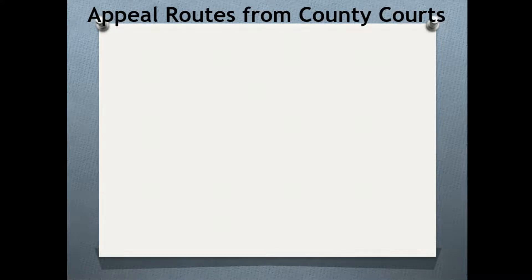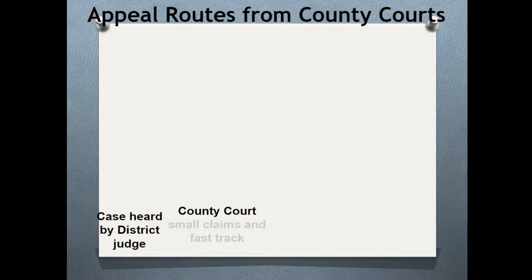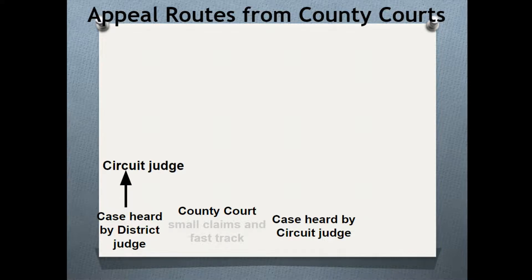If you've had your case heard and you're not happy with the decision, you can appeal. The appeal route in civil cases is slightly different to criminal cases because in civil law, for small and fast-track claims, it depends which judge originally heard your case. If your case in the county court on the small claims or fast track was heard by a district judge, your appeal goes to a circuit judge in the same court. If it was heard by a circuit judge, it goes to a high court judge.